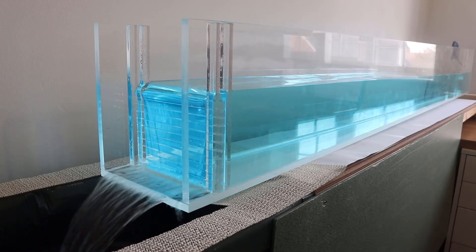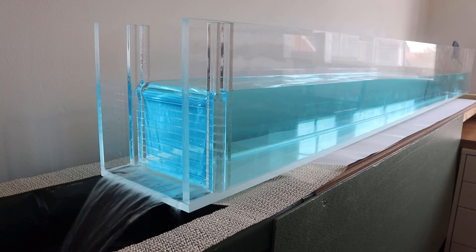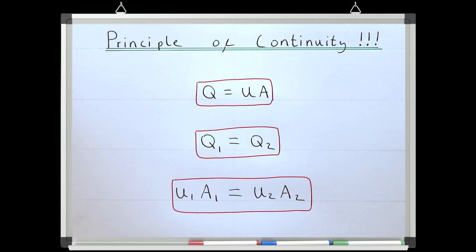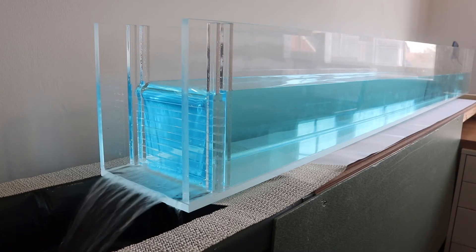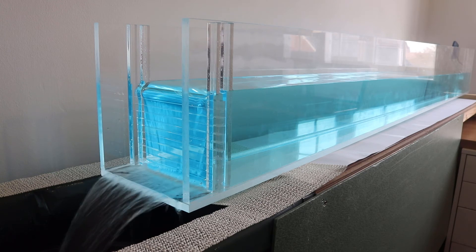The other main type of flow we need to consider is open channel flow, which is broadly defined as any flow where the fluid has a free surface open to atmosphere. We can also use the continuity equation for open channel flow when the flow is steady. If open channel flow is steady, we know that the discharge must be the same between two points in that flow, so again we can use the continuity equation for this scenario.